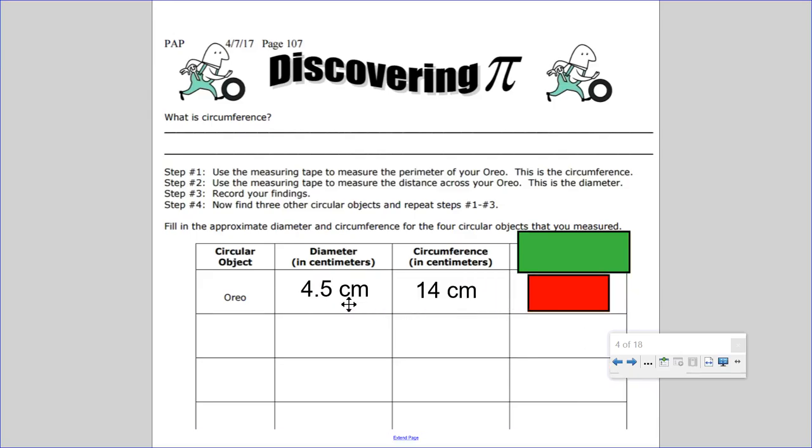Record your findings. Now find three other circular objects and repeat steps one through three. For example, maybe I find a pancake. I just came back from Amsterdam and it seemed like all the food is stroopwafels and a lot of pancakes. So imagine I have a pancake and the circumference was about 30 centimeters, that's the perimeter of the pancake, and the diameter was 10 centimeters.